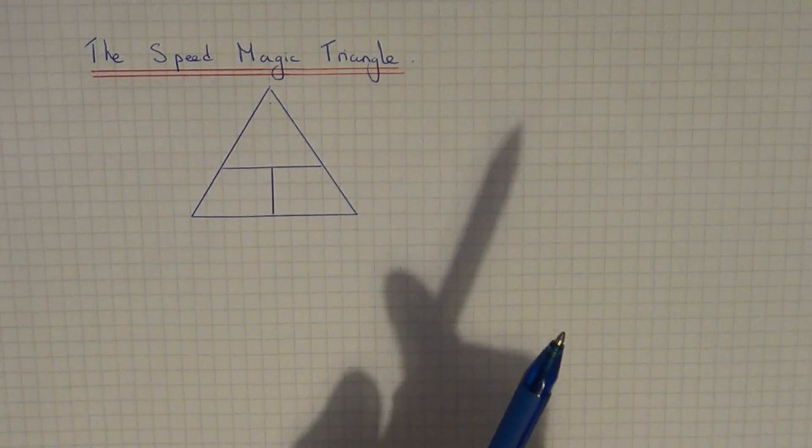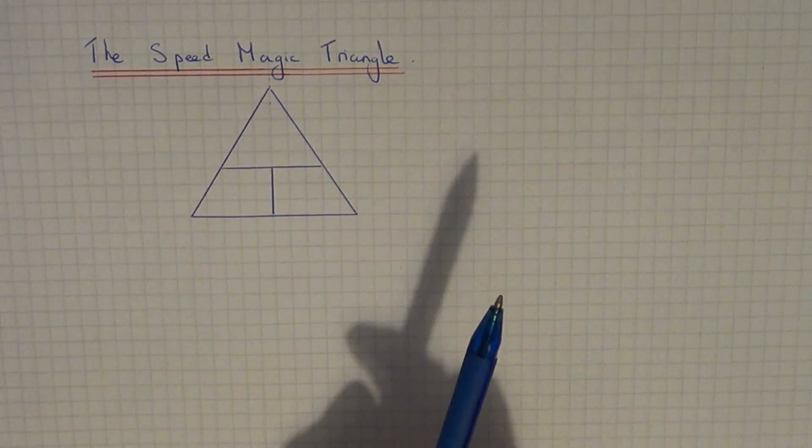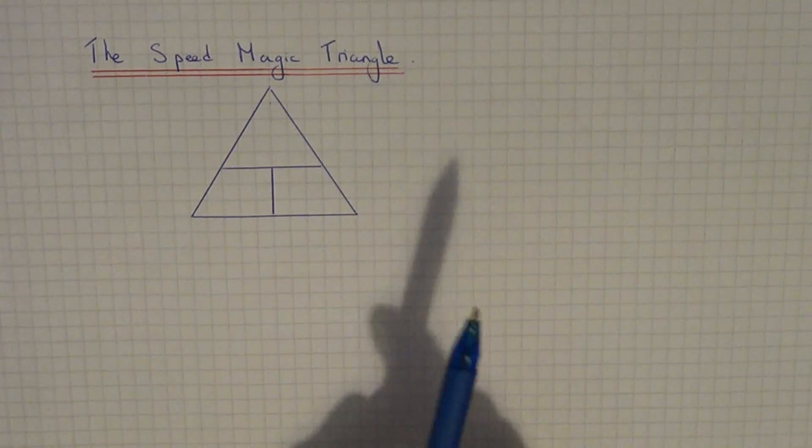The Speed Magic Triangle can be used to help you with problems involving speed, distance, and time.